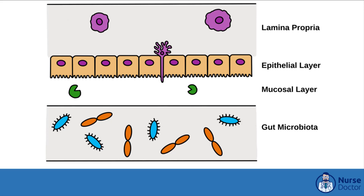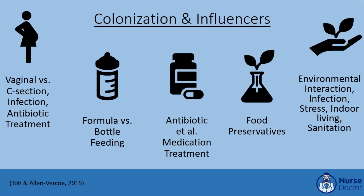A healthy person will have a diverse and stable collection of gut microbiota that help maintain the intestinal barrier. These symbionts can upregulate proteins that are important for maintaining tight junctions between epithelial cells. Also, their metabolism results in the generation of short-chain fatty acids, which act as trophic factors for the mucosal and epithelial barriers.